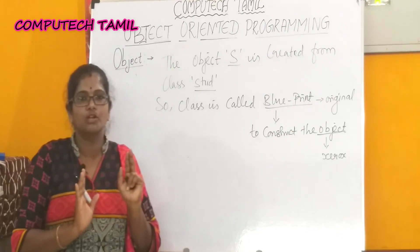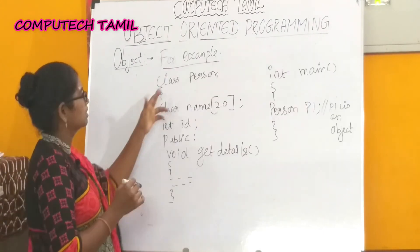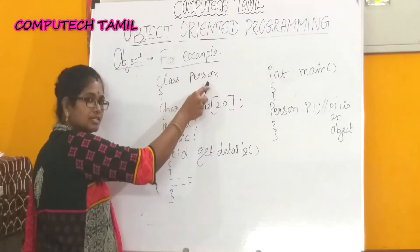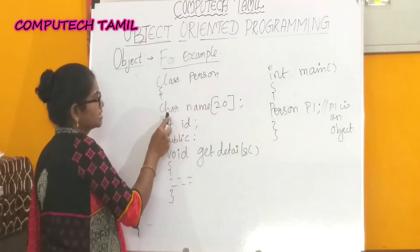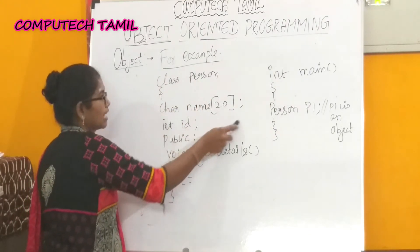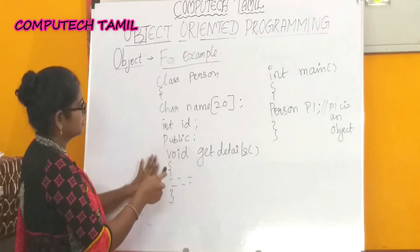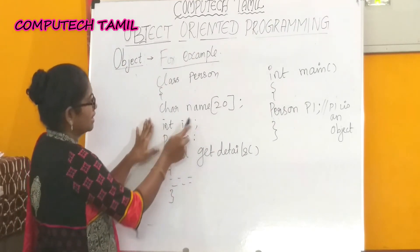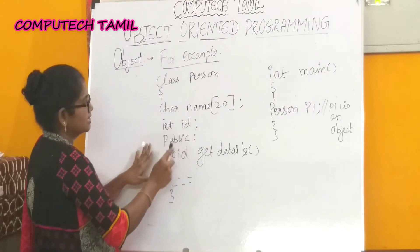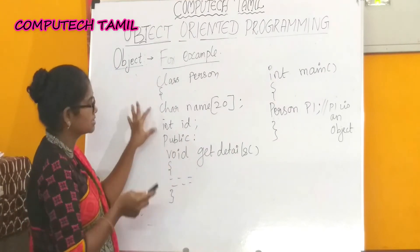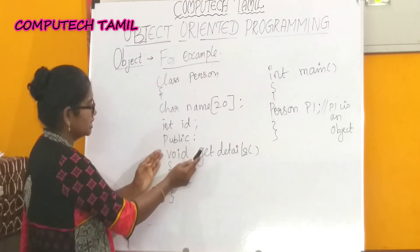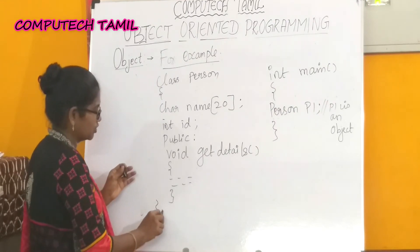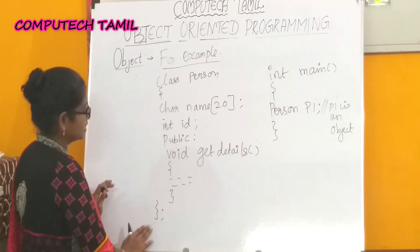Let's look at this example. Class Person. The class has data members: char name and int id. And a member function: void getDetails. These two data members and the member function are defined inside the class.